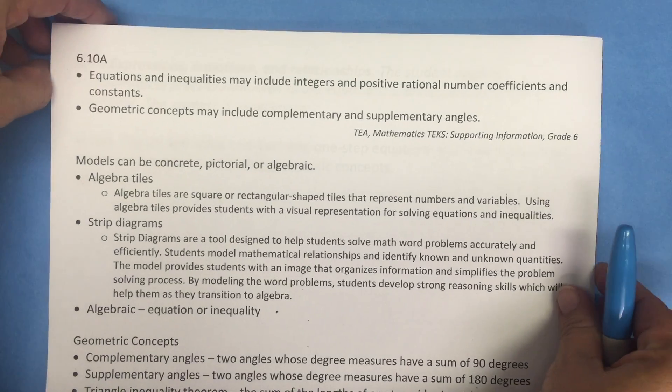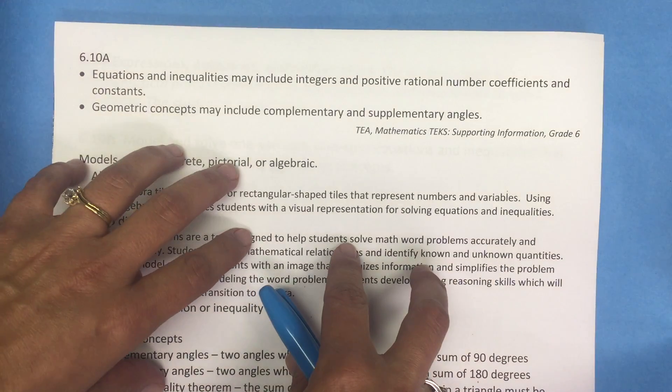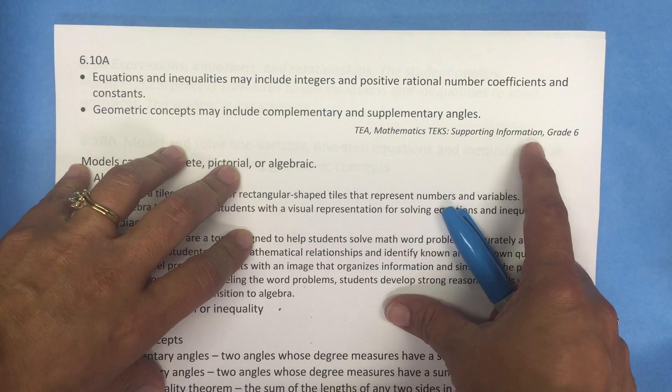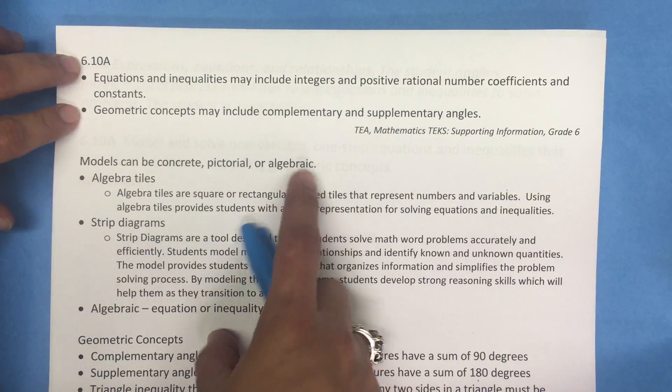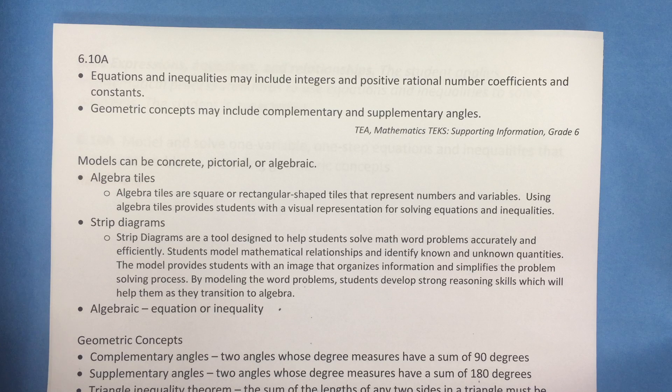I'd like to share some information about this standard from TEA, from the mathematics TEKS supporting information document for grade 6. The document states that equations and inequalities may include integers and positive rational number coefficients and constants. It also states that geometric concepts may include complementary and supplementary angles.